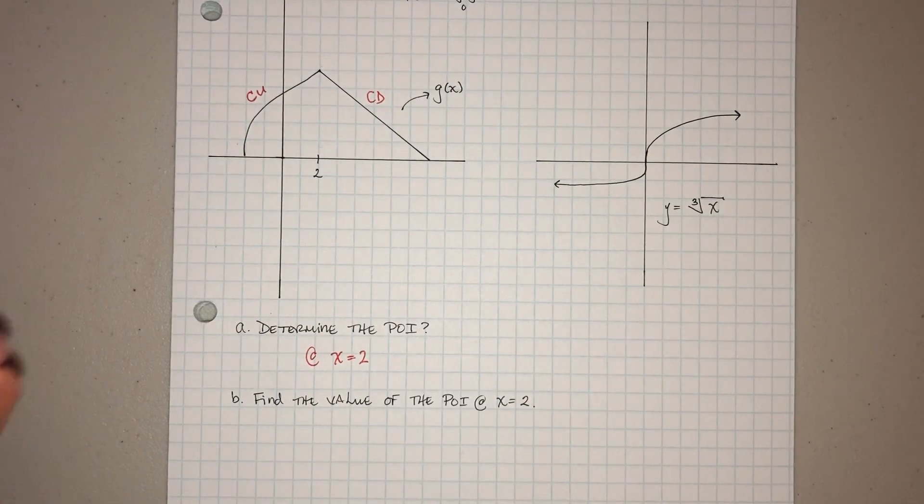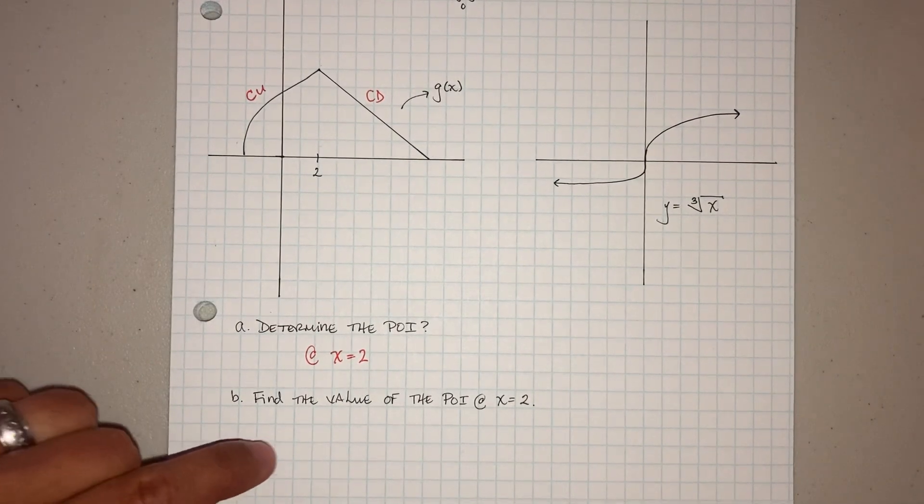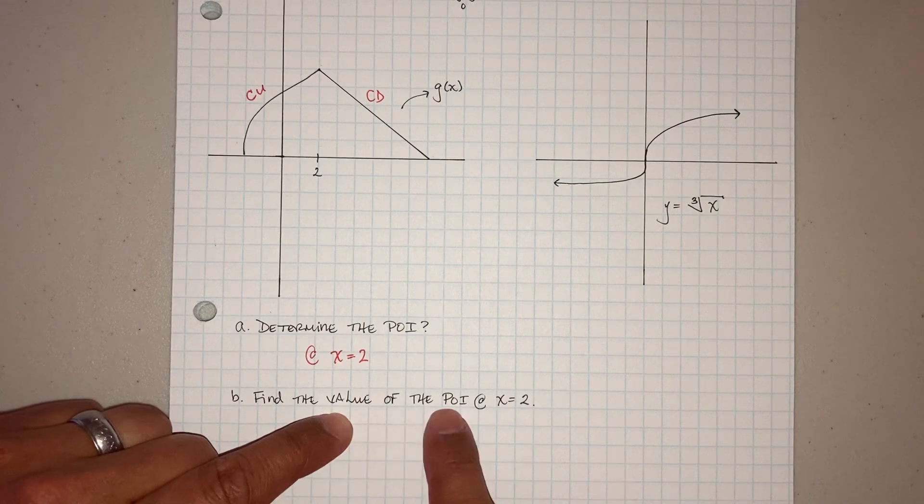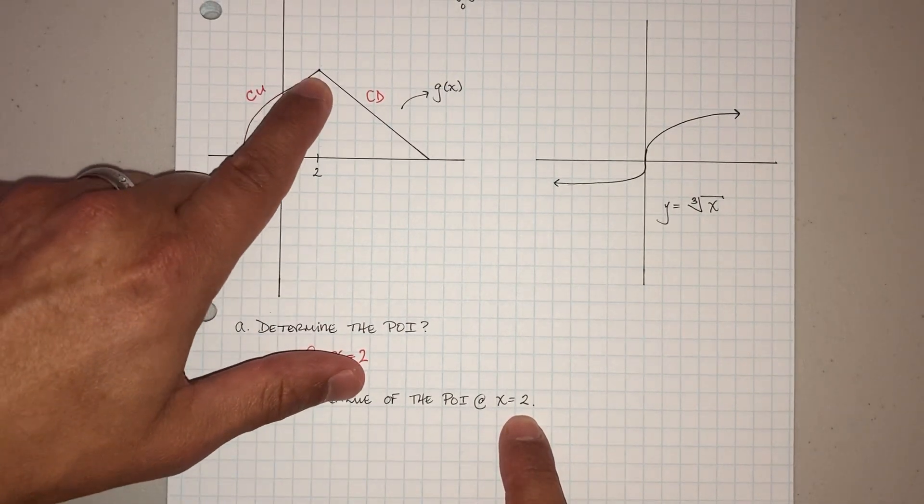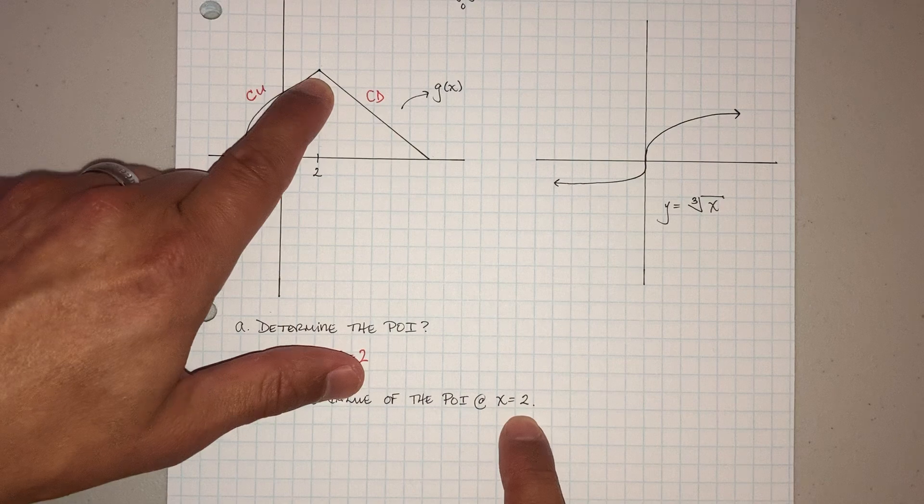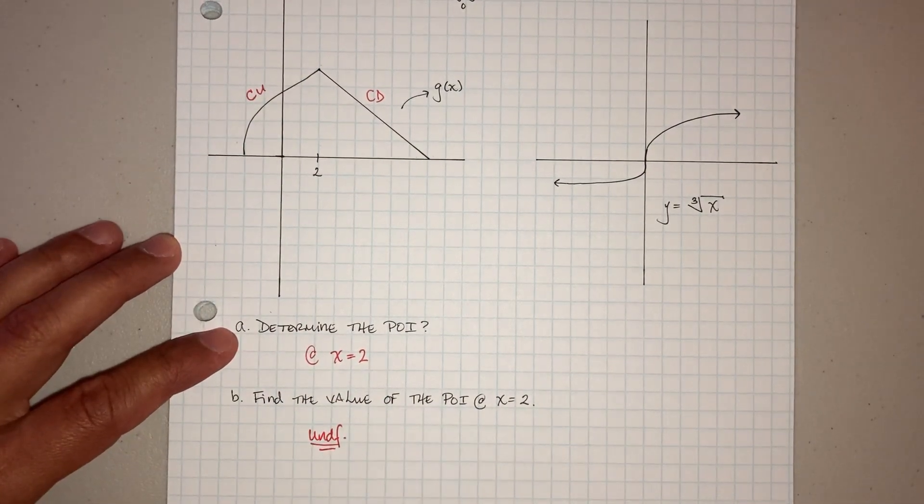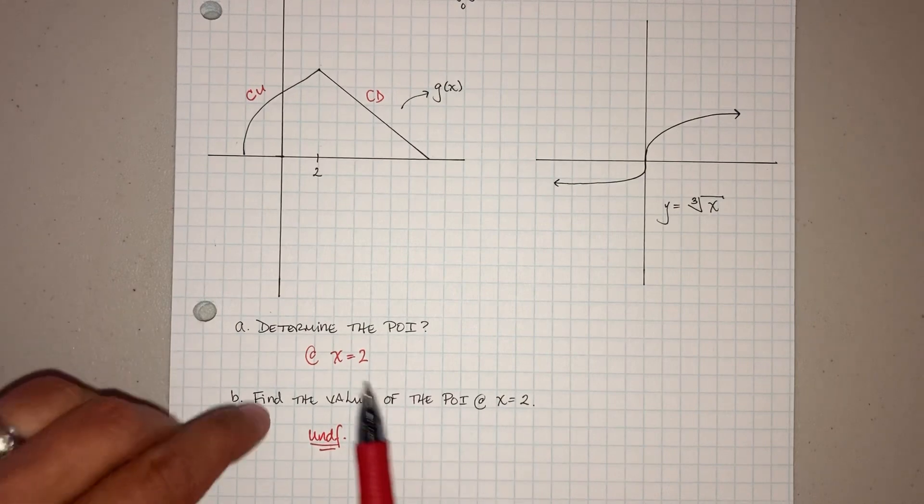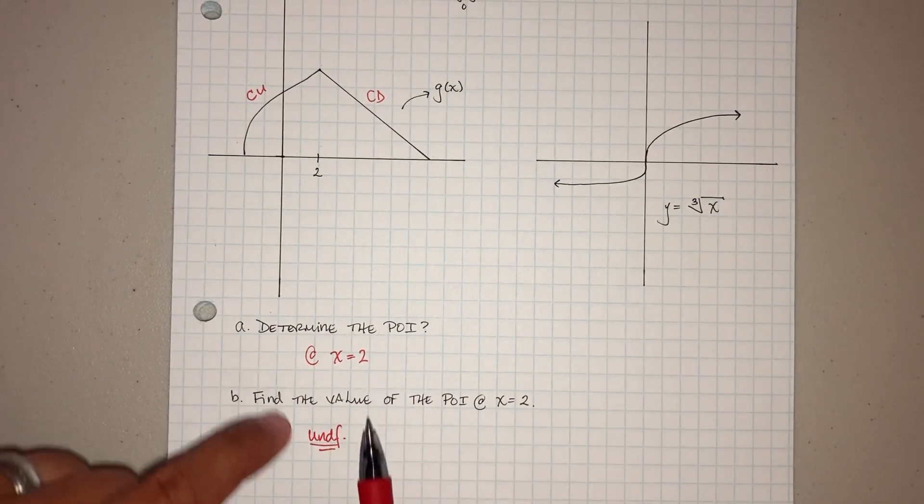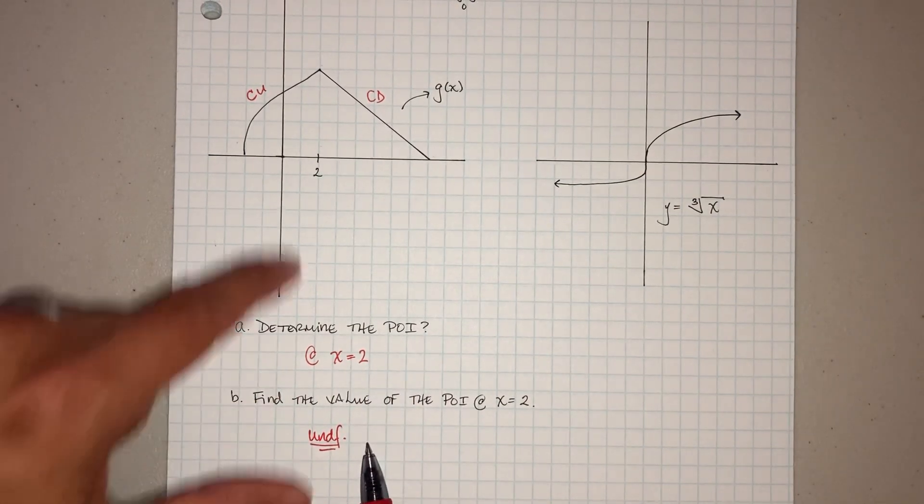Now, you got to be careful and read the question carefully because they'll ask you, find the value of the point of inflection at x equals 2. That's when you're correct. That's why you can't because it's a cusp. It will be undefined, right? Because there is a point of inflection, but you can't find the value of it because it's at a cusp.